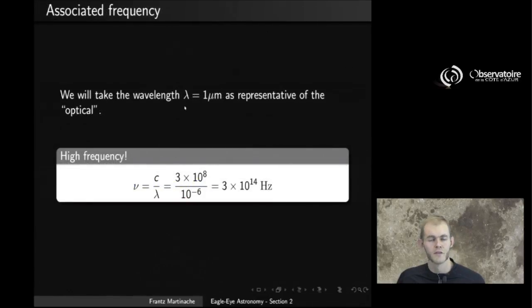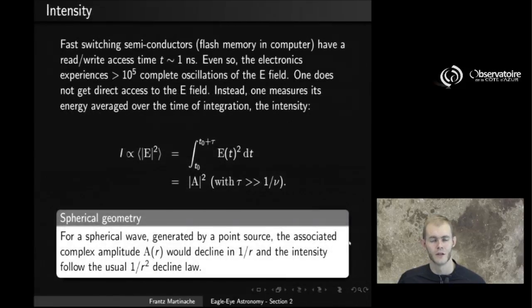Now, if we take the wavelength of 1 micron as being somewhat representative of what we call the optical regime—remember that visible goes from about 0.4 to about 0.8, so 1 micron is very close to being visible—and if you just do the numerical application of computing the frequency associated to this, you get the frequency is simply the speed of light over the wavelength. That's 3×10^8 divided by 10^-6, because we have about 1 micron. You end up with a frequency of about 3×10^14 hertz, that is 3×10^14 oscillations per second, which is a huge number if you think about it, a very large number.